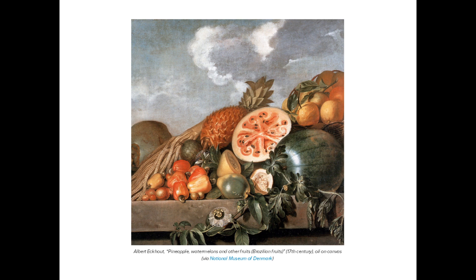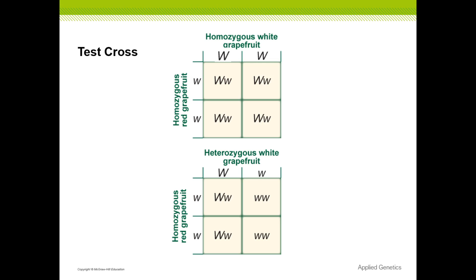The last thing for this section is to understand what a test cross is. Test crosses allow us to analyze what genotype we have within our population. Previously we were looking at populations trying to get them all to be homozygous, but how do you know if they actually are — especially with a small population? What you do is take an individual that you know is homozygous recessive and cross them with the unknown individual.